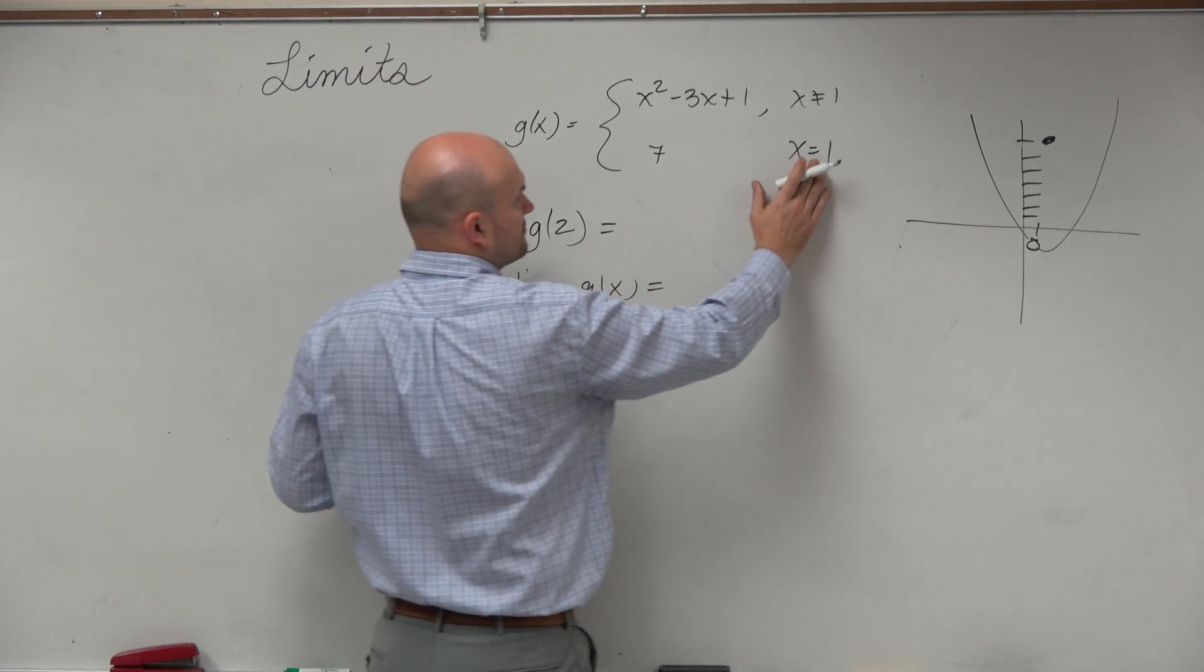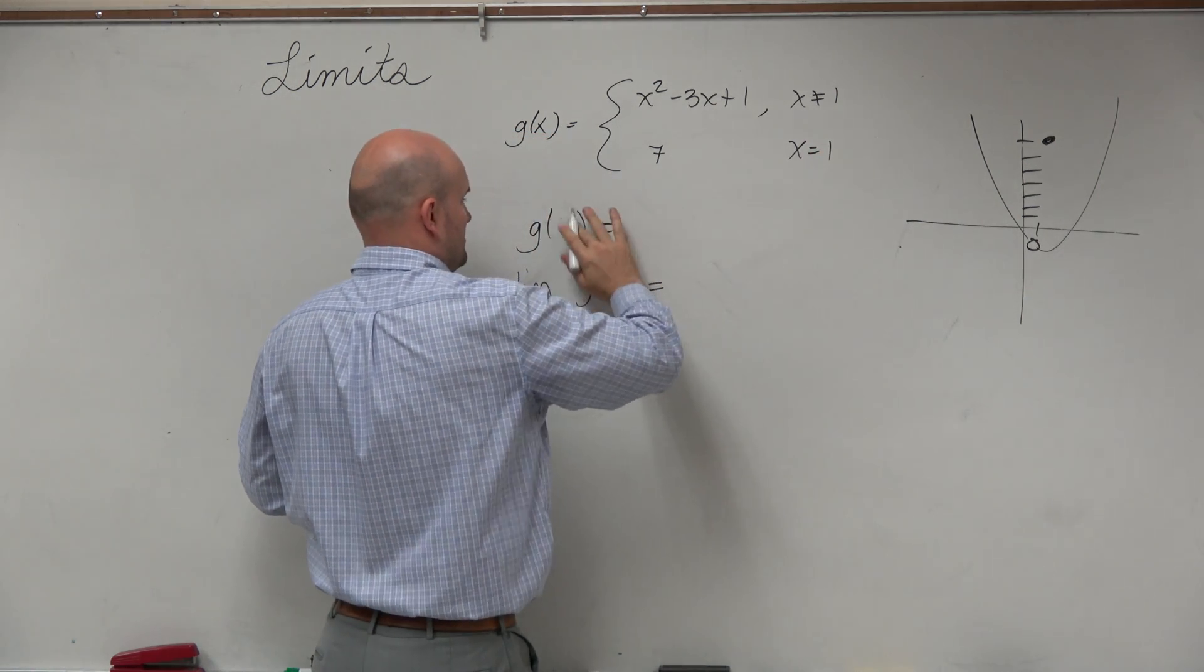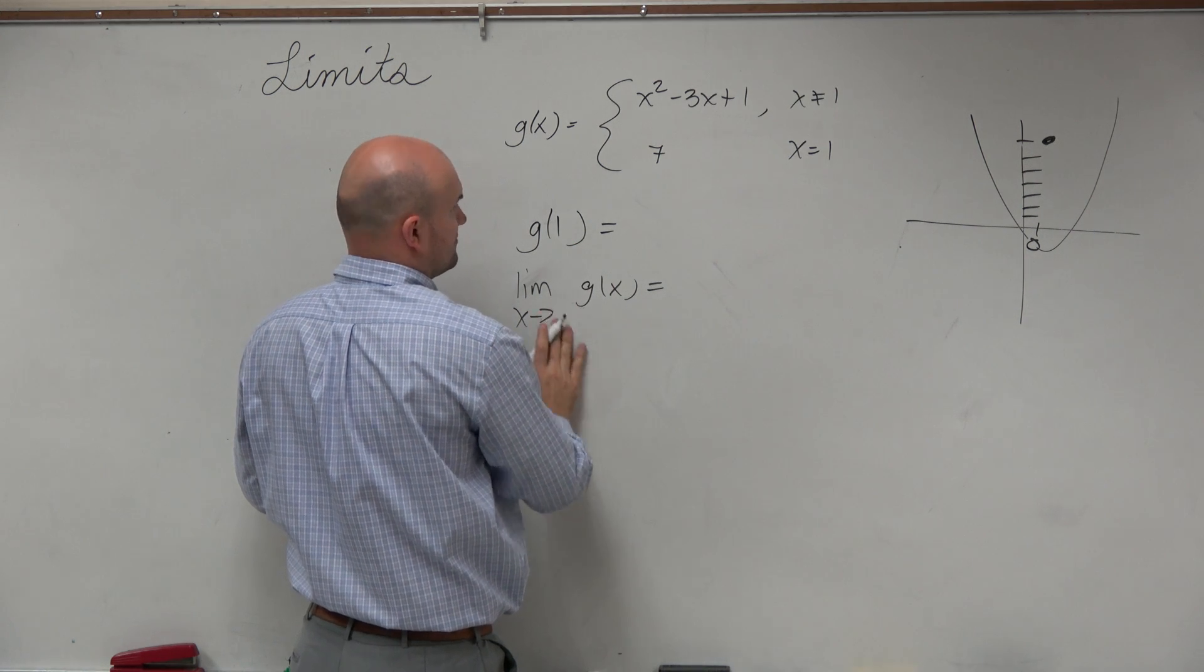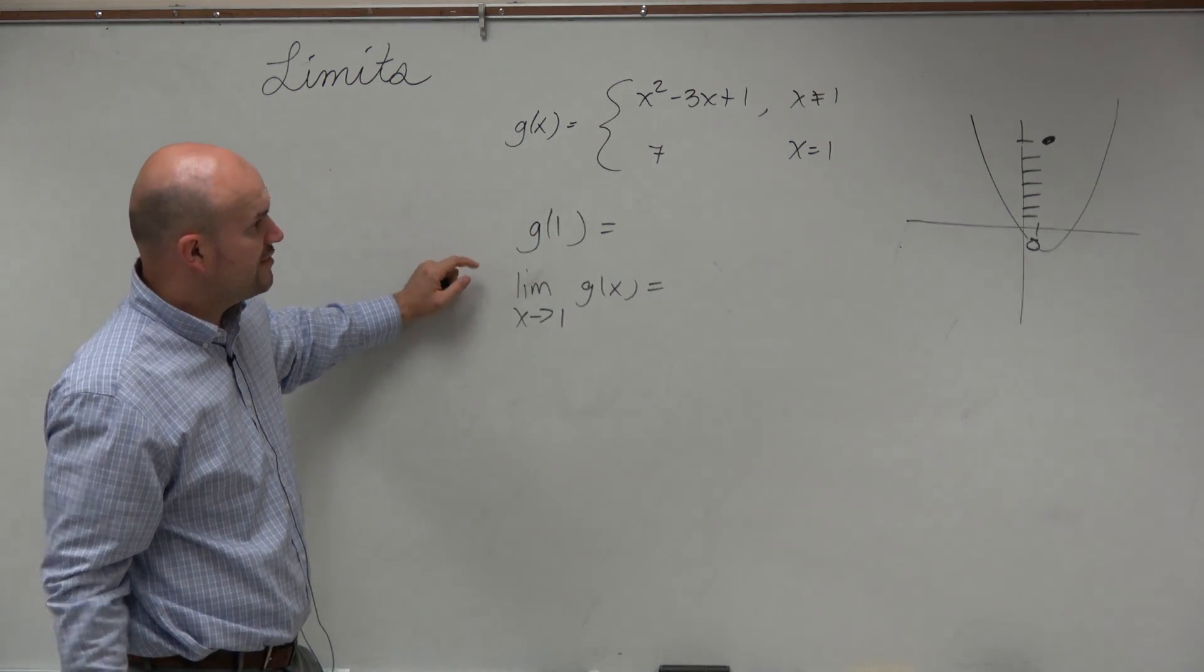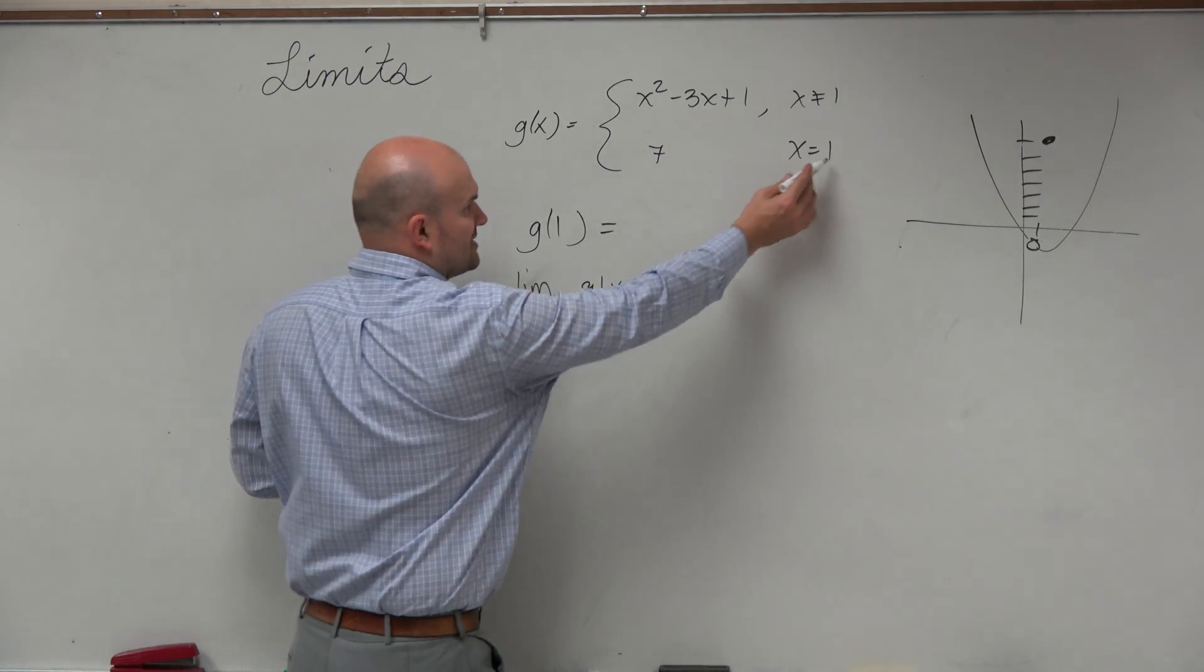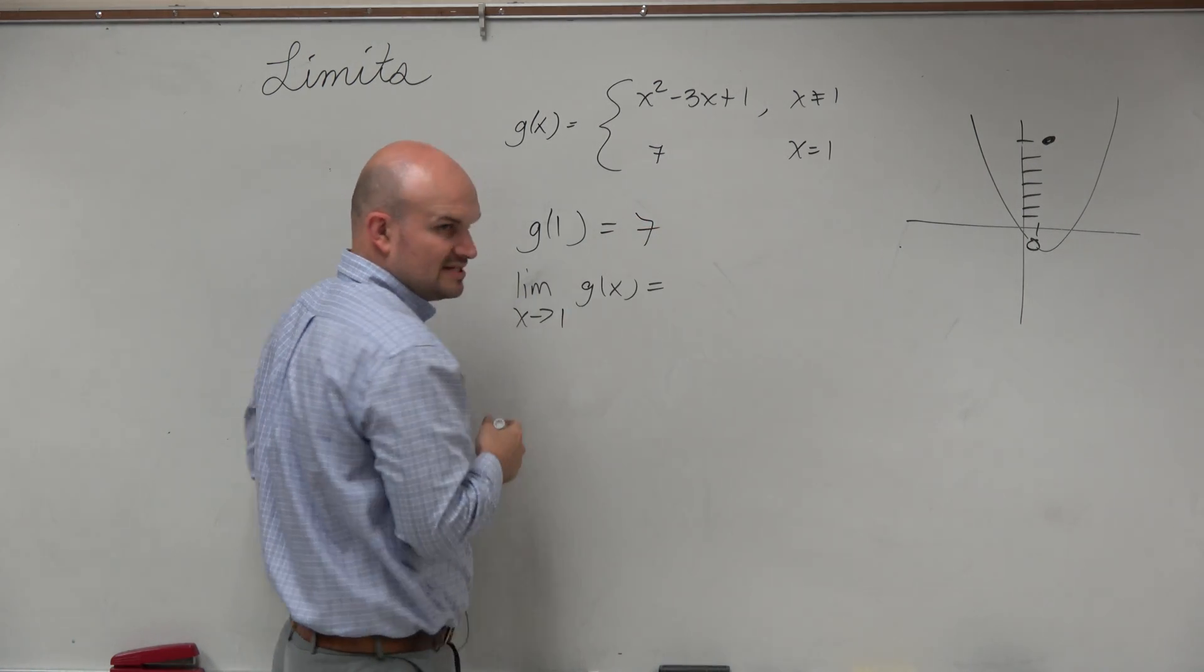Oh, I'm sorry, that was supposed to be 2. Oh, it's supposed to be 1. Why did I mess that? I don't know why I did that. OK. g of 1, if we don't want to evaluate it for 1, it's just, well, when x equals 1, it's 7. Boom. That was easy.